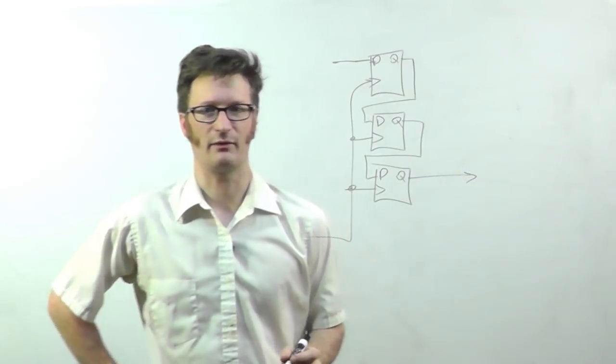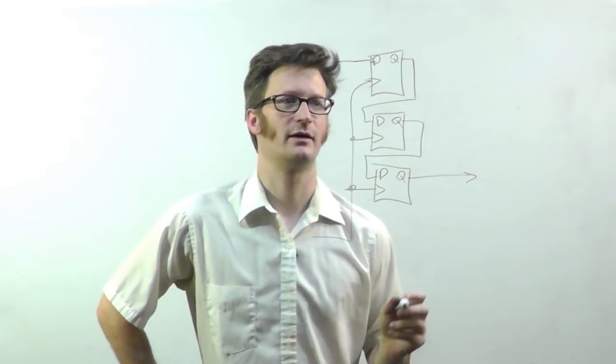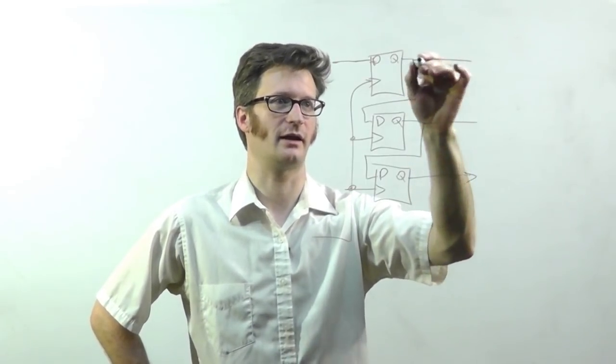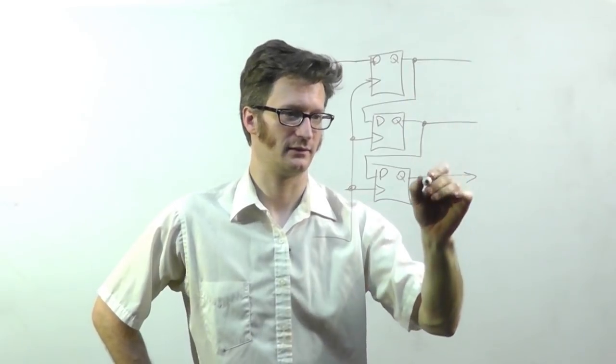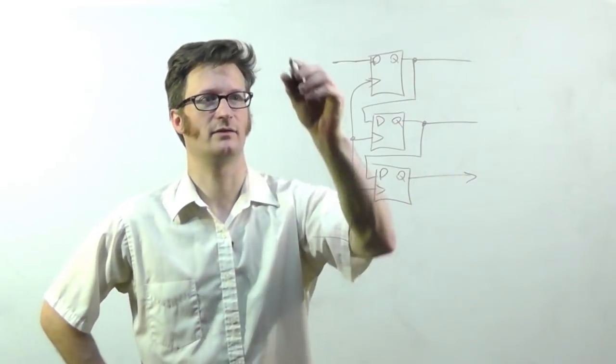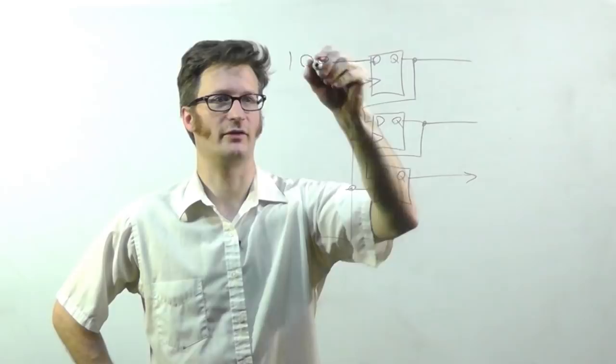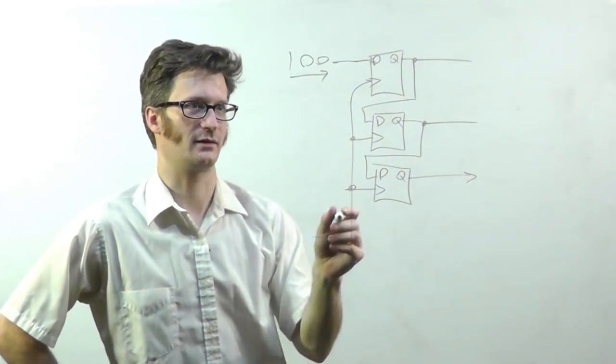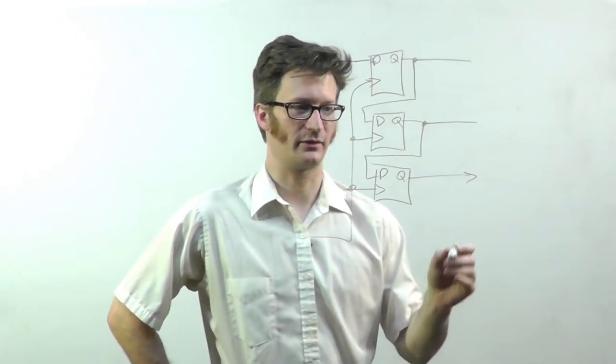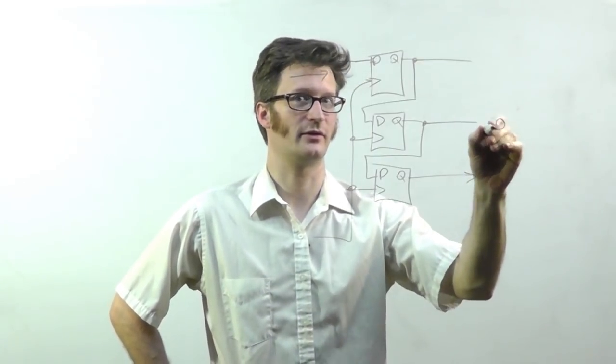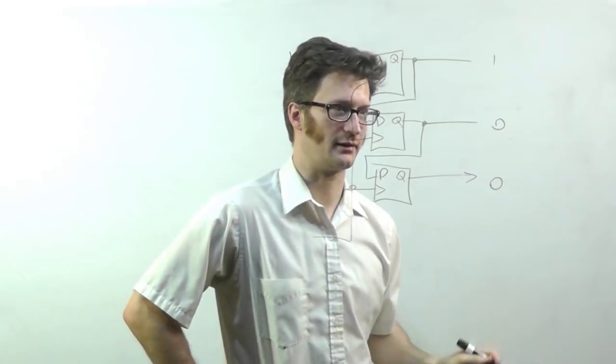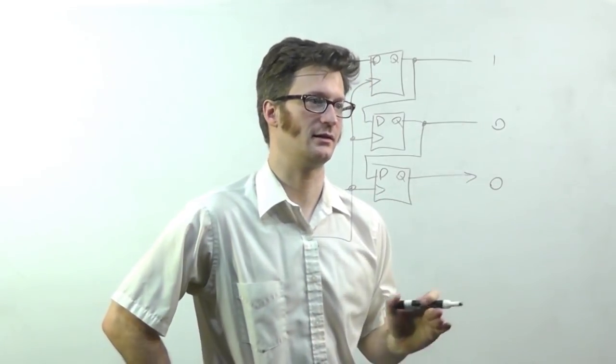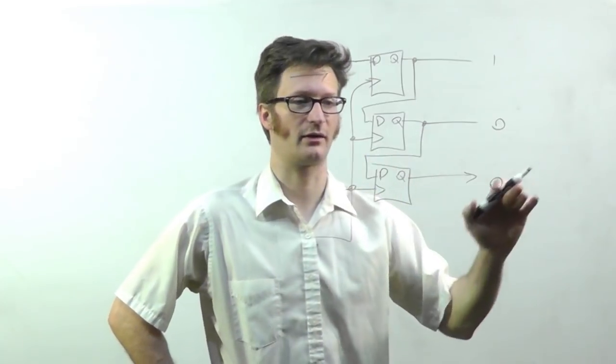Now that was serial in, serial out. You can very easily convert this into serial in, parallel out. So let's say I have one, zero, zero, right, and I'm putting it in like that, so zero goes first. After three clocks I have zero, zero, one coming out of my outputs. So that's serial in, parallel out.